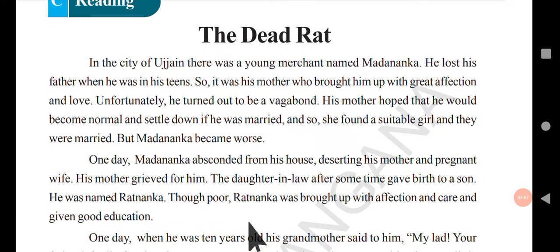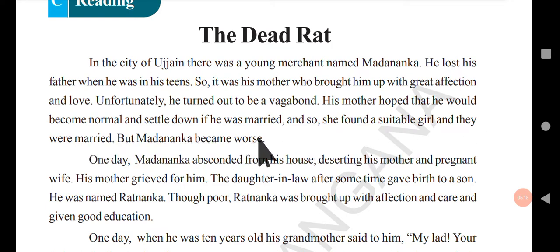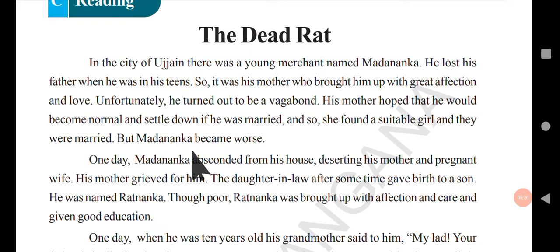In the city of Ujjain there was a young merchant named Mandanka. He lost his father when he was in his teens. It was his mother who brought him up with great affection and love. Unfortunately, he turned out to be a vagabond. His mother hoped that he would settle down if he was married, so she found a suitable girl and they were married. But Mandanka became worse.